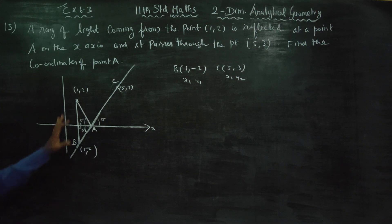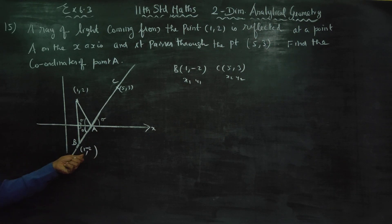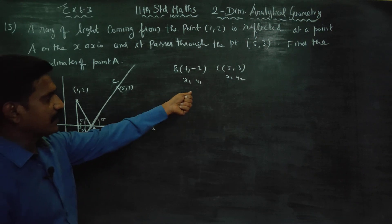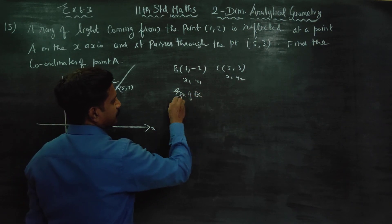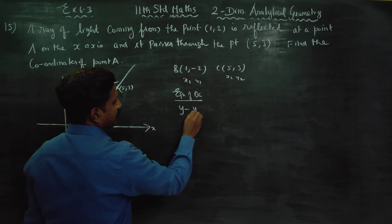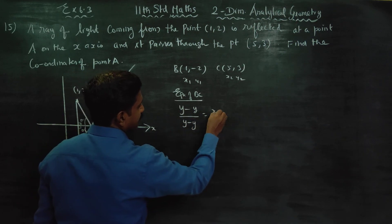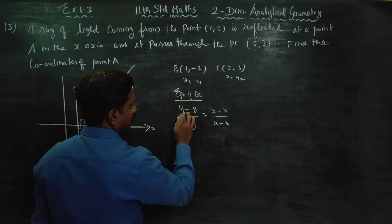The diagram is self-explanatory. You have to identify the B point and find the equation of straight line BC. What is the formula? y minus y1 by y2 minus y1 is equal to x minus x1 by x2 minus x1.